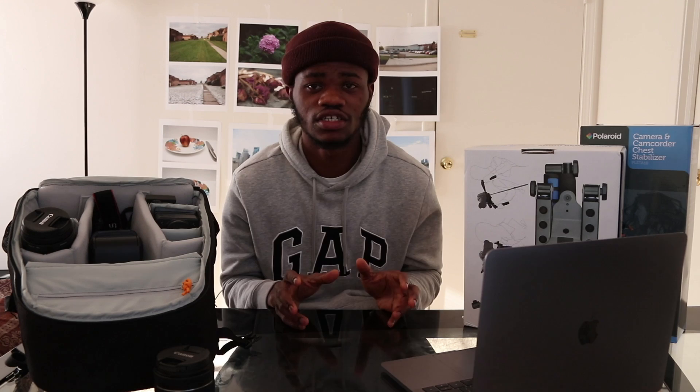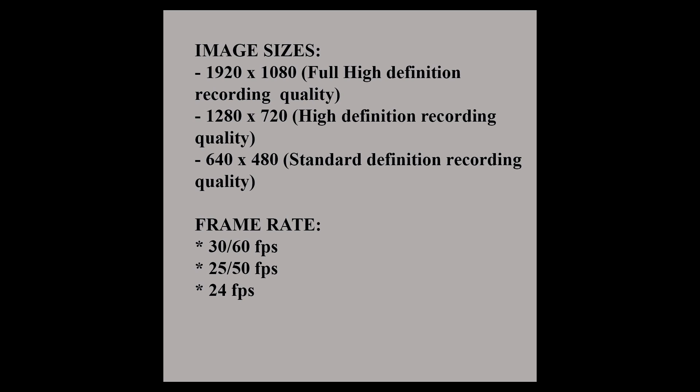Talking about video, shooting a video on a 6D is so fabulous. I'll be giving a brief overview of the video modes and compression. The first is 1920 by 1080, which gives full high definition recording quality. The second is 1280 by 720, which gives high definition recording quality. The third is 640 by 480, which gives standard definition recording quality.